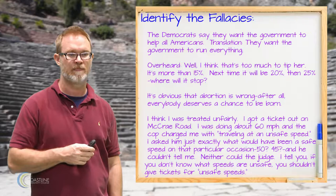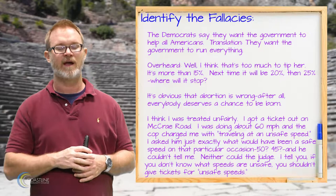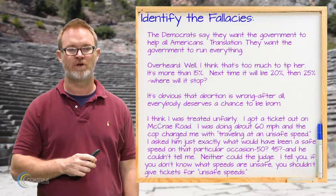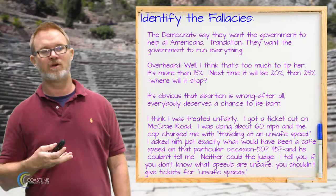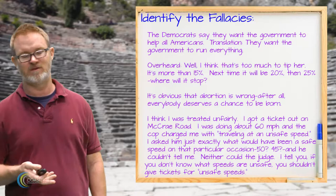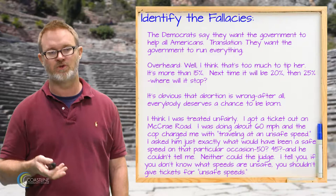The next one says: I think I was treated unfairly — I got a ticket out on McCray Road, I was doing about 60 miles an hour and the cop charged me with traveling at an unsafe speed. I asked him just exactly what would have been a safe speed — 50, 45 — and he couldn't tell me. Neither could the judge. If you don't know what speeds are unsafe, you shouldn't give tickets for unsafe speeds. This is a really nice example of what we call the line drawing fallacy — the person is asking for a specific point at which the speed becomes unsafe, but that's not really how it works.